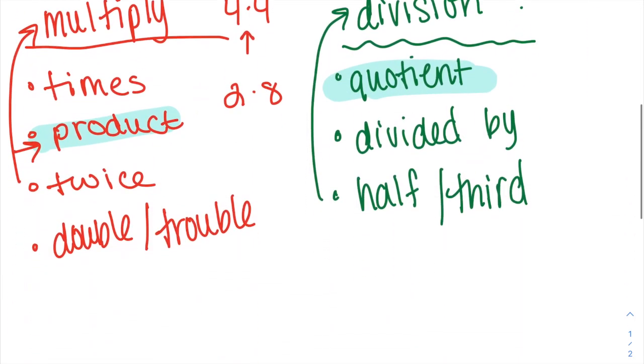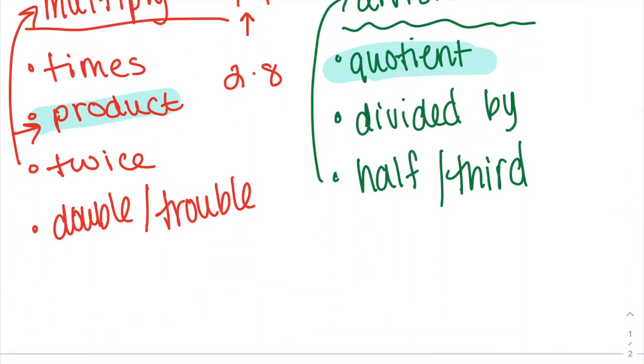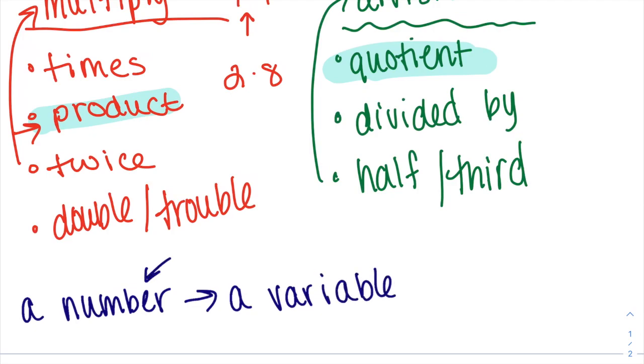We also indicated or we found out that a number means a variable. So if you were to ever read a number times three, we don't know what that number is. If we ever need something to stand in for an unknown value or an unknown number, we use a variable. The most common variable is x.